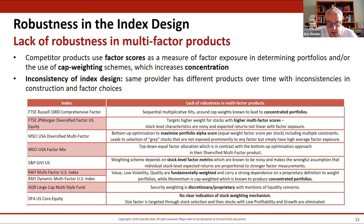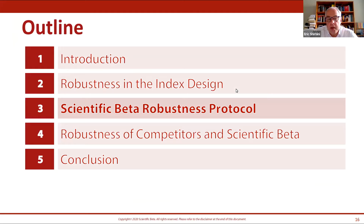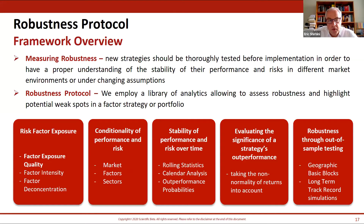In the next section, we will ask Dimitris to address: if there is a lack of robustness, how do you measure it? What measurements should you use, and is there a common framework or protocol that can be applied consistently to factor strategies? I'll hand back to Dimitris to talk about the measures that can be used to identify a lack of robustness and also the framework.